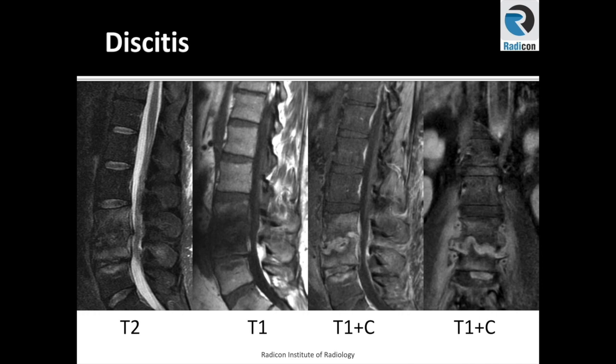On the right side, post-contrast images in sagittal and coronal planes demonstrate significant post-contrast enhancement in the disc, as well as suggestion of epidural enhancing tissue and epidural abscess. Further, you can see enhancement going into both psoas abscesses bilaterally. This is a case of L3-L4 discitis.